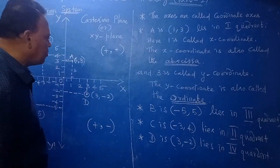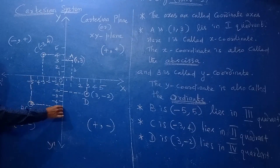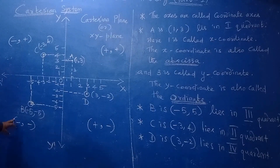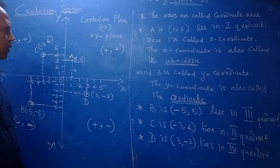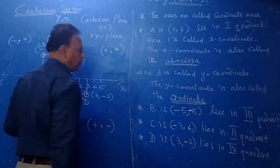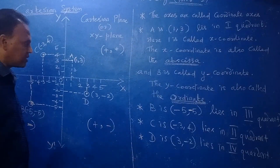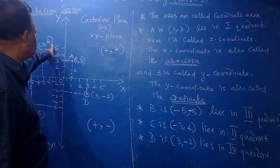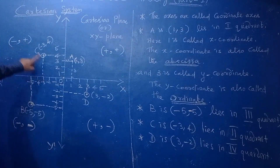For point B at (−5, 5), draw perpendiculars from the point to both axes. This point lies in the second quadrant, where x is negative and y is positive: minus, plus. In the third quadrant, both coordinates are negative: minus, minus. In the fourth quadrant, x is positive and y is negative: plus, minus. Always remember these sign rules for each quadrant.